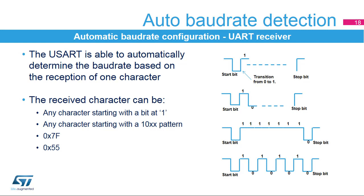The USART receiver is able to detect and automatically configure the baud rate based on the reception of one character. The received character can be a character starting with a bit at 1; in this case the USART measures the duration of the start bit, falling edge to rising edge. Any character starting with a 10XX pattern; in this case the USART measures the duration of the start and of the first data bit, from falling edge to falling edge, ensuring better accuracy in the case of slow signal slopes.